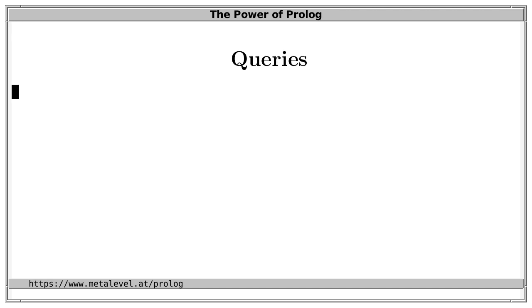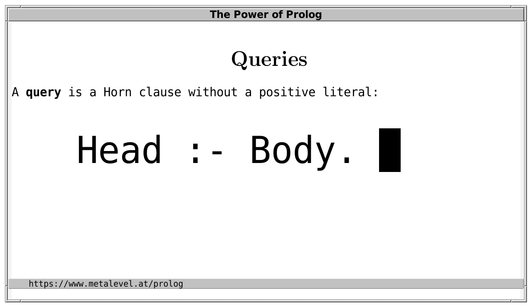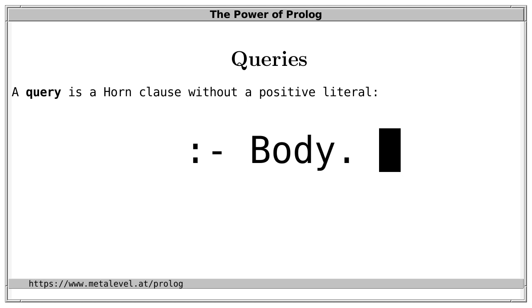When we have written a Prolog program — that is, when we have clearly expressed what holds under what conditions — then we can post queries over our predicates. Syntactically, a query is a Horn clause that doesn't have a positive literal; that is, a query has the form colon-dash body. A Horn clause without a positive literal is also called a goal clause, and the body is also called a goal.